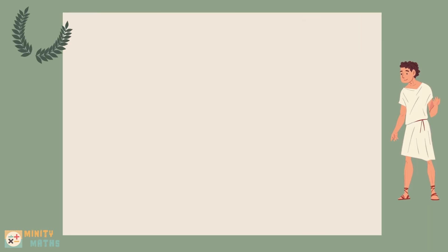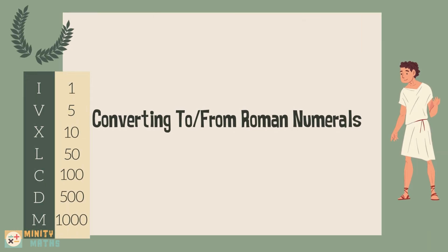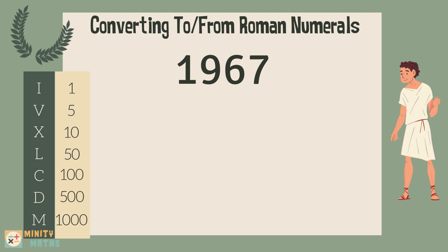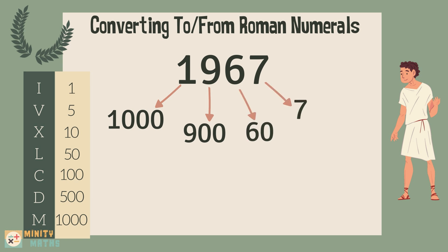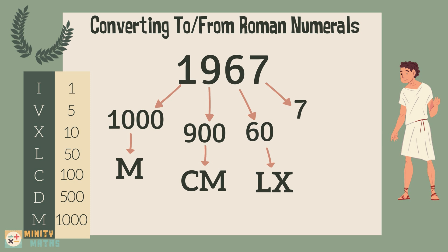Now let's see how to convert the number 1967 into Roman numerals. You may want to watch our video about place value, linked above, for a recap. Firstly, we break the number down into its component parts: thousands, hundreds, tens and units. We can then convert each part to the appropriate symbol. Once we have the symbols for each part of the number, we can combine them together to get the equivalent Roman numeral.